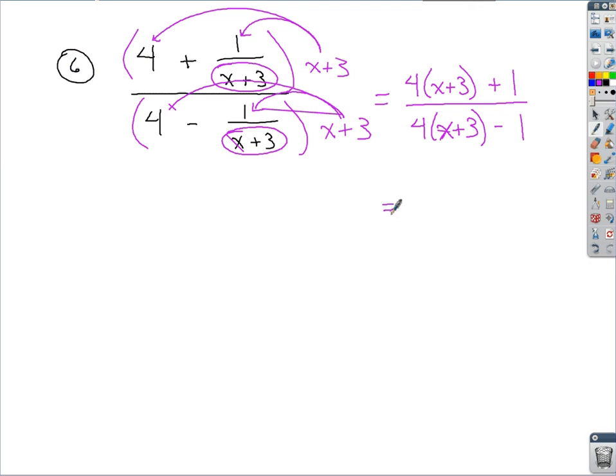Now if you distribute this out, you've got 4x plus 12 plus 1 over 4x plus 12 minus 1. Collect your like terms.